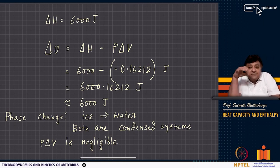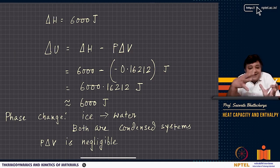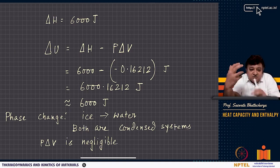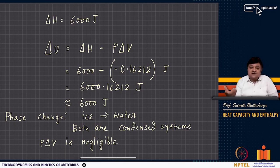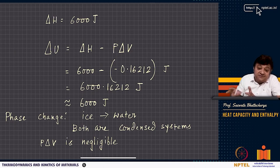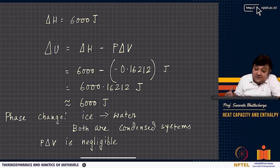A phase is a portion of matter that is chemically homogeneous, physically distinct, and mechanically separable. Ice and water are two phases of H₂O — the solid and liquid phases. They have different molar volumes, densities, and refractive indices. Both are condensed phases, meaning they are not as compressible as gases. You need enormous pressure to see appreciable volume change. So PV work in condensed phases — solids and liquids — is negligible.